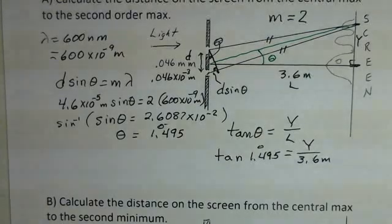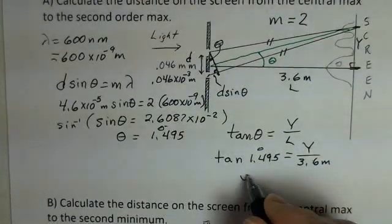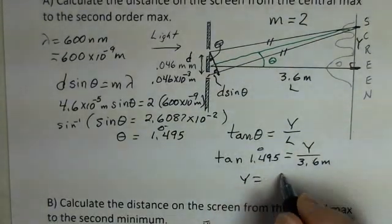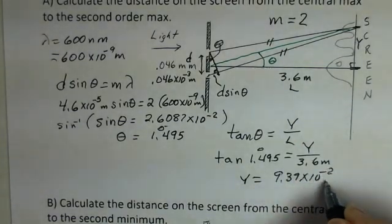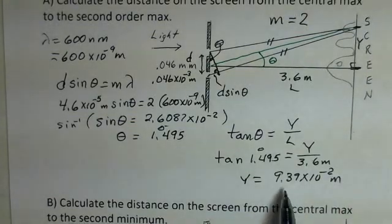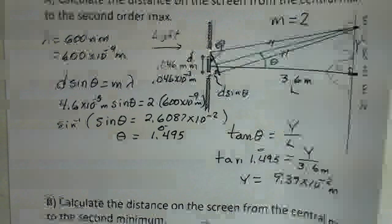Again, you should pause, do your own calculation. I came up with Y of 9.39 times 10 to the minus 2 meters. That would be 9.39 centimeters. So that's the position to the second order maximum.